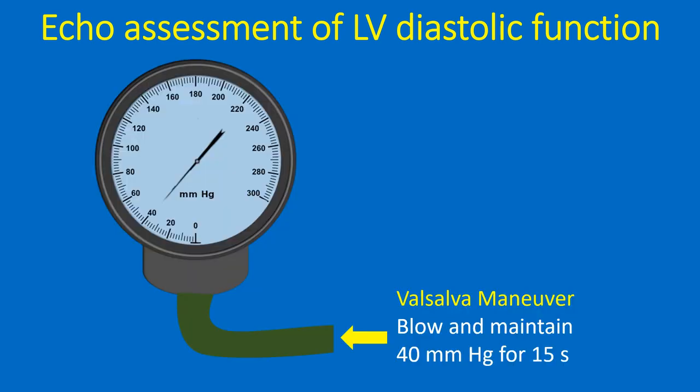Some of the other useful parameters are Mitral E-velocity deceleration time, changes in mitral inflow with Valsalva maneuver, Mitral L-velocity, isovolumic relaxation time, left atrial maximum volume index, pulmonary vein systolic-by-diastolic velocity ratio, and Mitral Color M-mode Vp and E-by-Vp ratio.